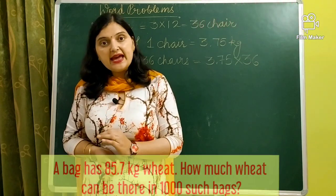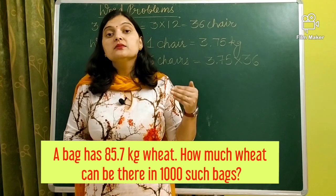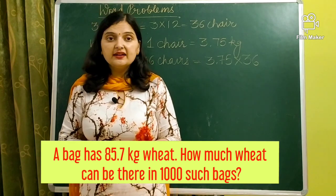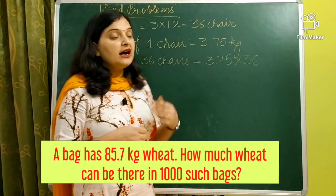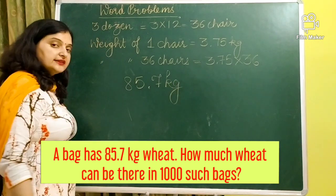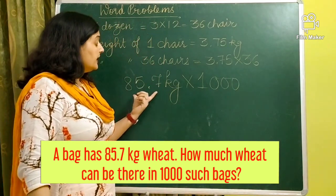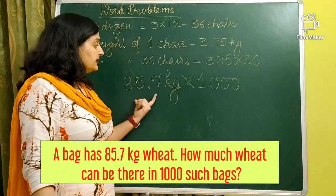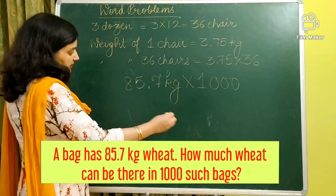Our next question: a bag has 85.7 kg of wheat. How much wheat can there be in 1000 such bags? One bag has 85.7 kg, so 1000 bags will have much more wheat. We will multiply the weight of one bag, 85.7 kg, by 1000 bags. Here we are multiplying a decimal number by 1000. Remember oral multiplication — whenever we multiply a decimal number by 10, 100, or 1000, we directly shift the decimal.